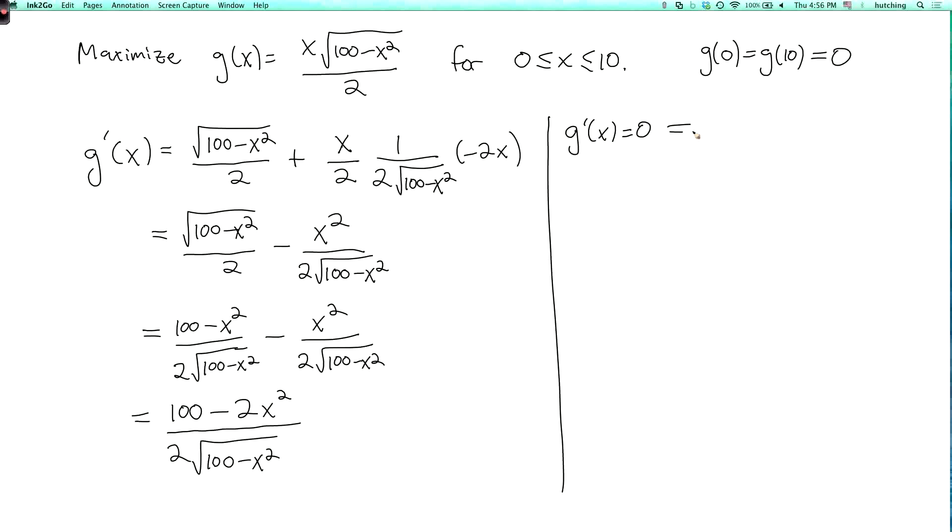The only other possibility is where g prime equals 0. So g prime of x equals 0 if and only if 100 minus 2x squared equals 0, which means x squared equals 50, and that's going to be true if and only if x equals the square root of 50. Of course x equals minus the square root of 50 is also a solution to this equation but it's not in the domain so we ignore it.